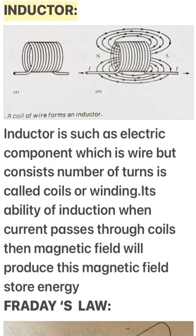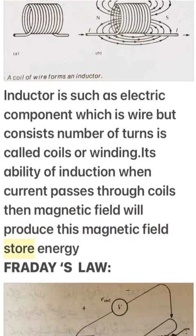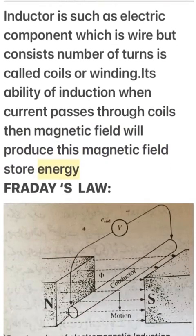Inductor. An inductor is an electric component which is a wire consisting of a number of turns, called coils or winding. Its ability of induction: when current passes through the coils, a magnetic field will be produced and this magnetic field stores energy.